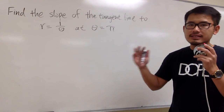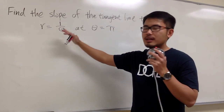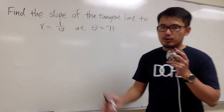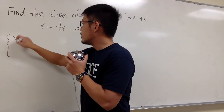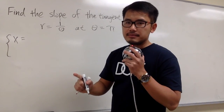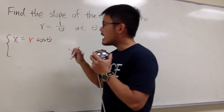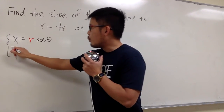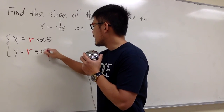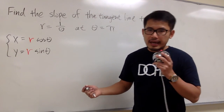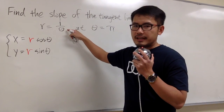Whenever we are trying to find the slope of the tangent line to a polar curve, we should take a minute and write this as parametric. We know x equals r times cosine theta, and y equals r times sine theta. In our case, r is a function of theta, which is 1 over theta.